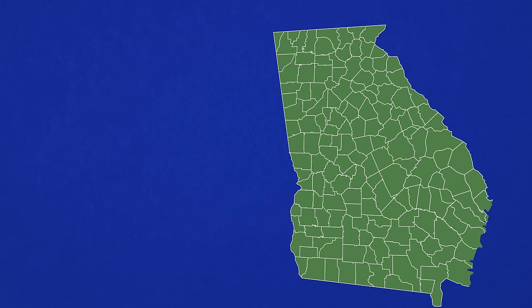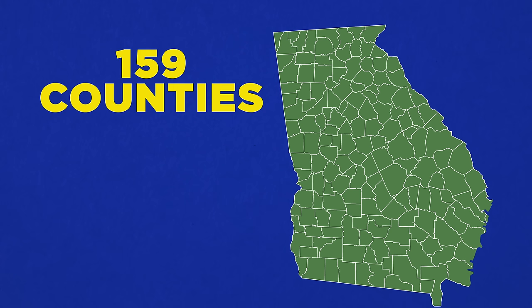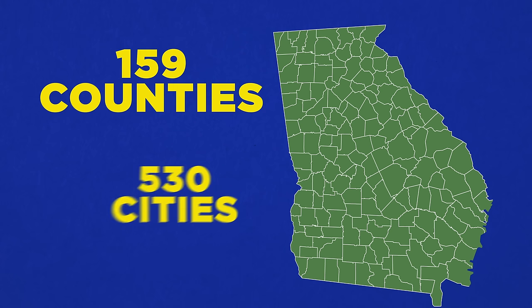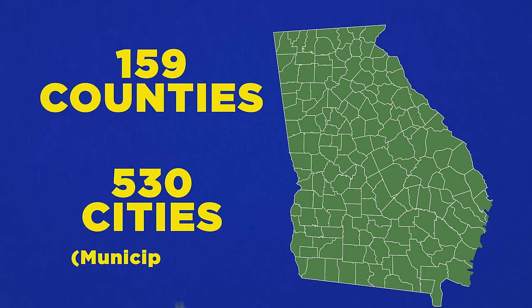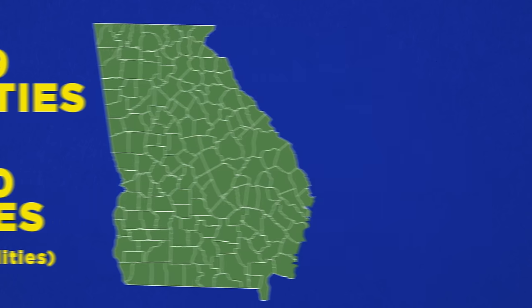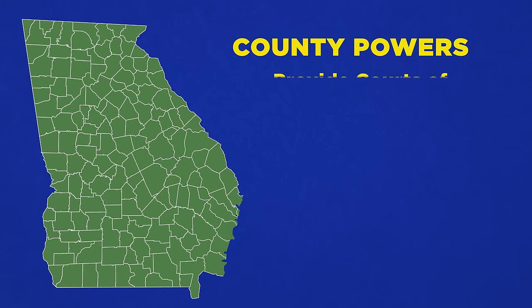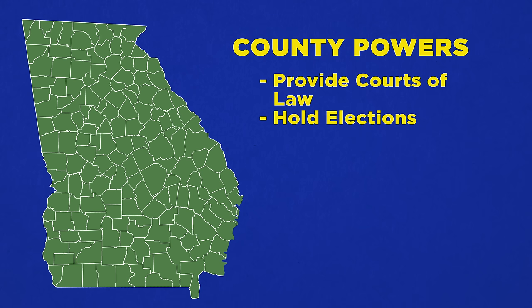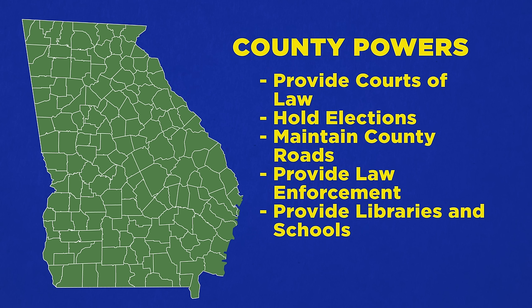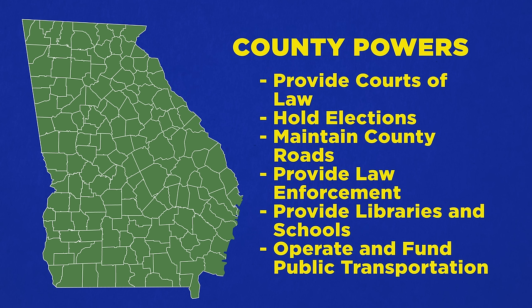And the layers don't stop there. Government powers extend to cities and counties within a state. In Georgia, there are 159 counties and over 530 cities, also known as municipalities, within these counties. Counties serve several purposes, such as providing courts of law, holding elections, building and repairing county roads, and providing services like police and fire protection, libraries, schools, and public transportation.